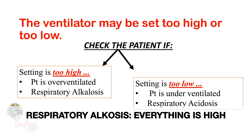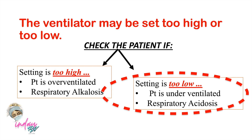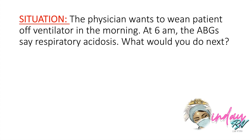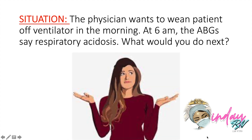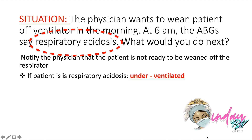In respiratory alkalosis, everything is elevated — the patient may also exhibit hyper-excitability, which you can verify through vital signs and symptoms. If the setting is too low, the patient may be under-ventilating and developing respiratory acidosis. Scenario: If you are a night-shift nurse and the physician wants to wean the patient off the ventilator in the morning, but the 6 a.m. ABG shows respiratory acidosis, notify the physician that the patient is not yet ready to be weaned off.